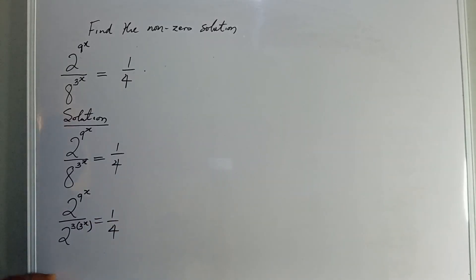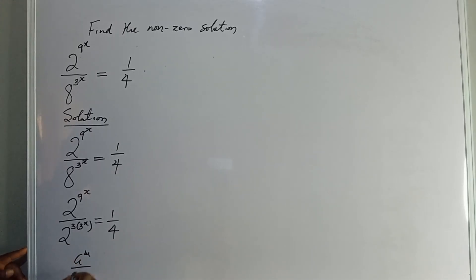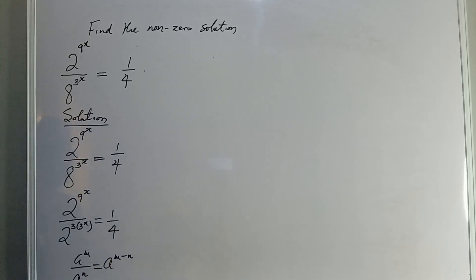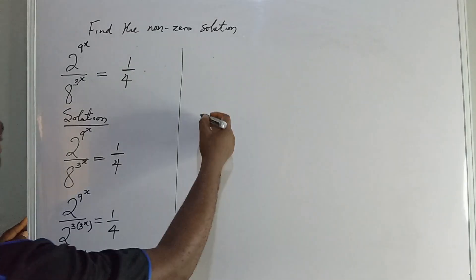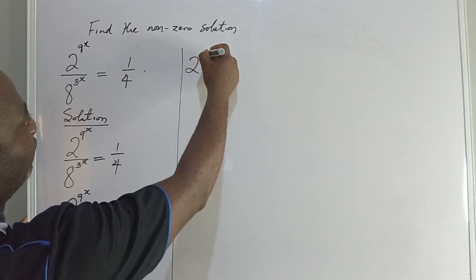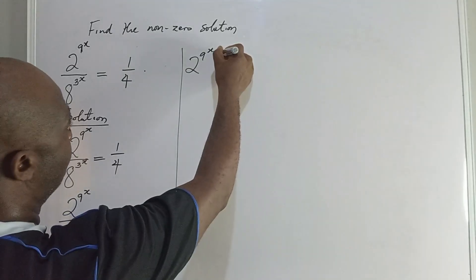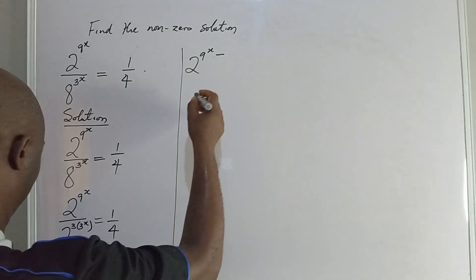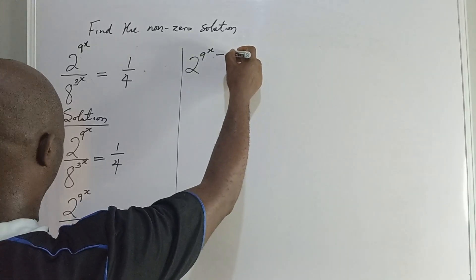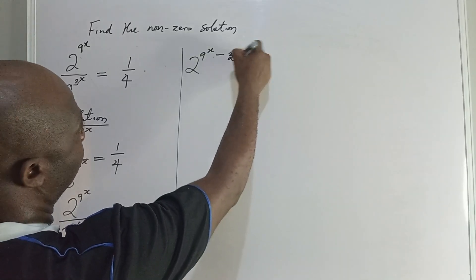From here I am going to apply this rule: if I have 8 to the power of m all over 8 to the power of n, this will mean 8 to the power of m minus n. I will apply this law to the left hand side. So the equation becomes 2 to the power of 9 to the power of x minus 3 times 3 to the power of x equal to 1 over 4.